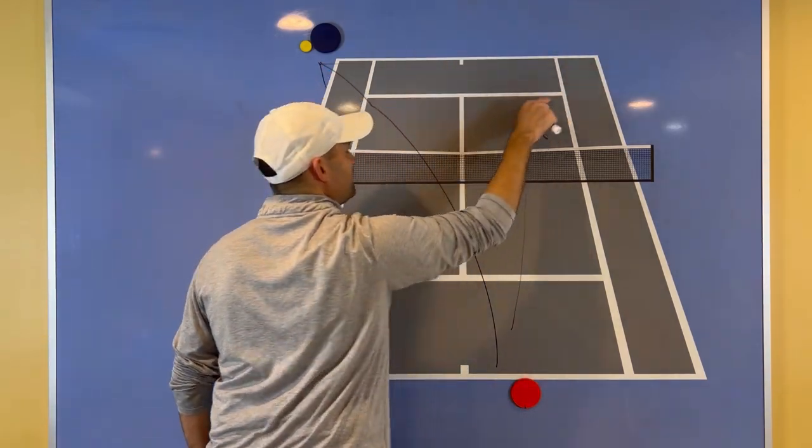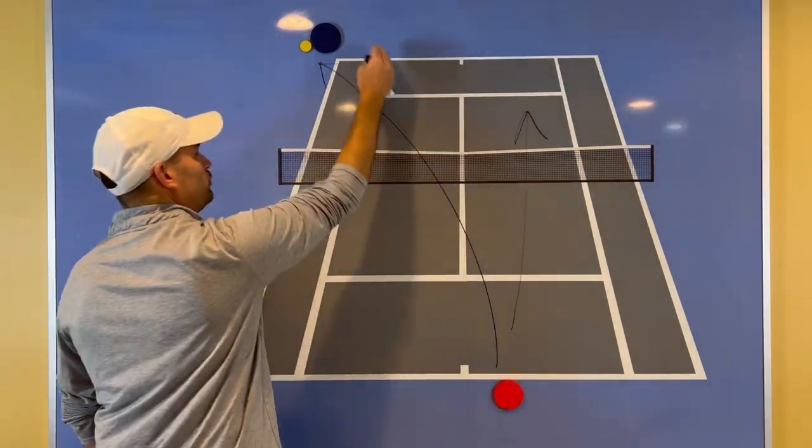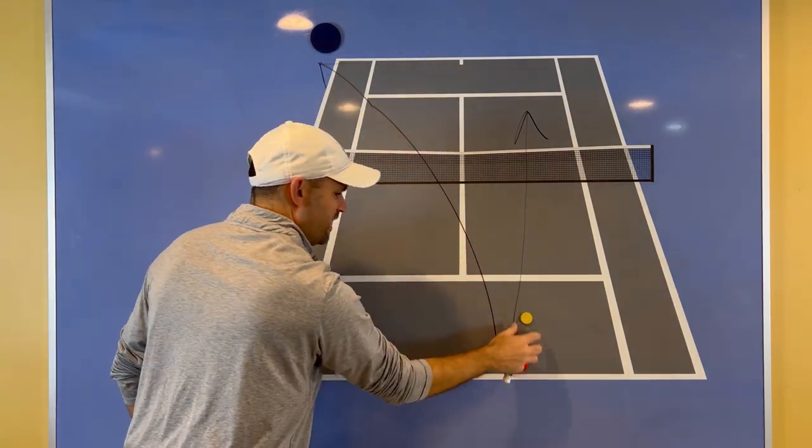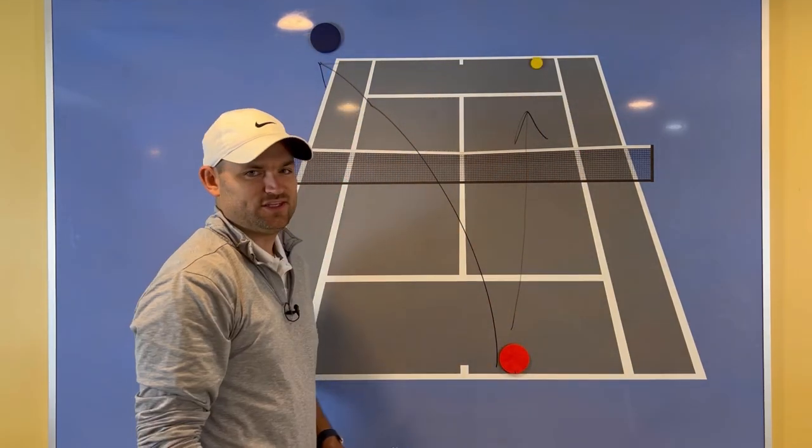And then that opens up this entire area. You pull your opponent off the court, they usually hit a much weaker ball, and then you can step inside and hit it into the open court.